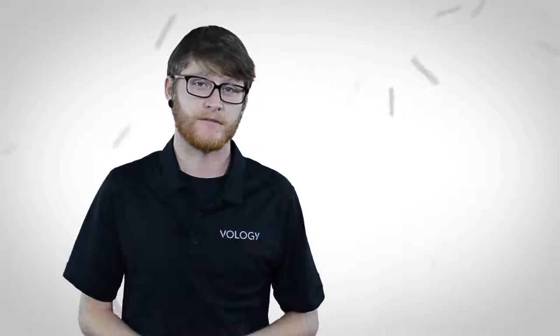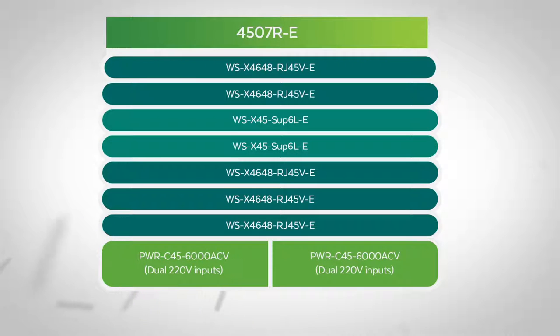Let's pull this all together and show a few chassis builds that leverage this knowledge. For a high-availability chassis-based access switch solution, we recommend the following build: a 4507R chassis with two Supervisor 6LEs, five 4648 RJ45 V-E line cards, and two 6,000-watt power supplies topped off with the IP-based feature set.